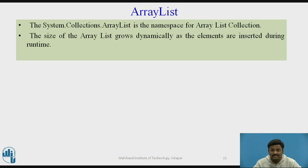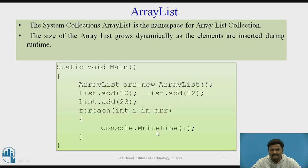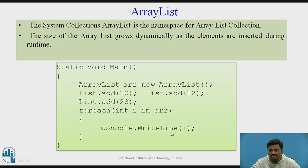The first collection type is ArrayList. The namespace is System.Collections.ArrayList, and System.Collections is the root namespace containing ArrayList, Stack, Queue, and others. The size of ArrayList grows dynamically even after it is defined. In a simple program example, an ArrayList object is declared with 'new ArrayList()' — size is not required. Elements are added one by one using the 'list.Add()' method — for example, adding 10, 12, 23. A foreach loop with 'Console.WriteLine' then displays all elements.